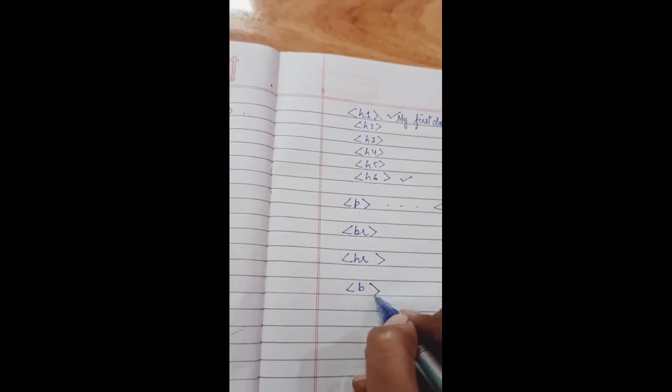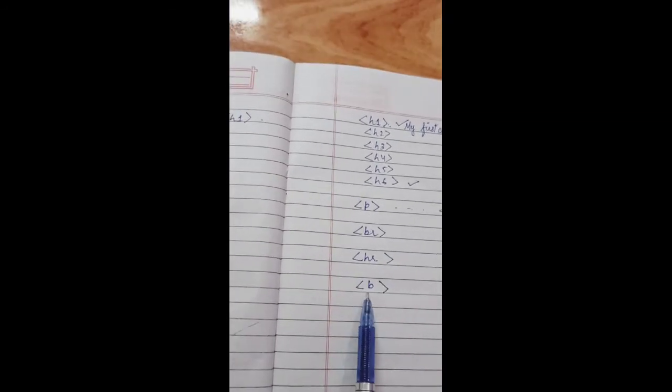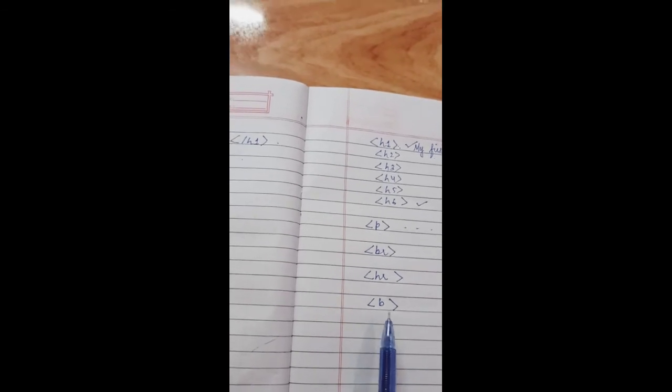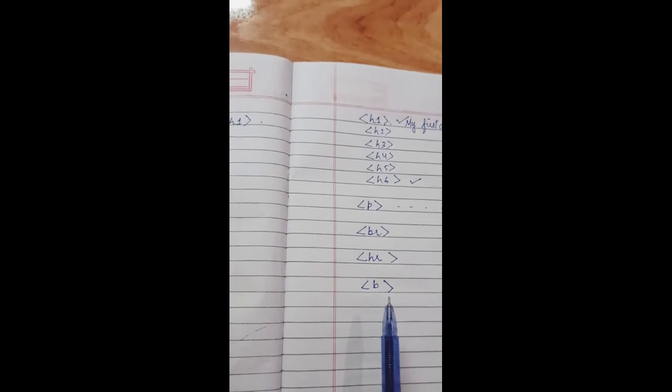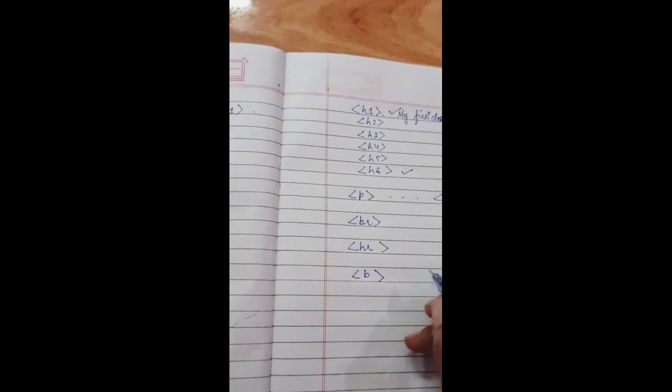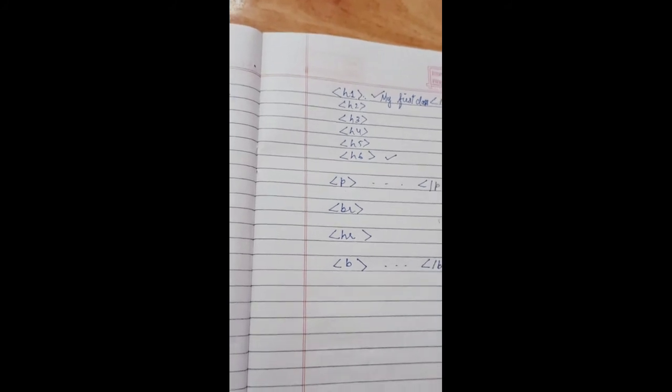Then bold tag. This is written as small B and it is used to give a bold effect to the text on a web page. It is a container tag starting with B and ending with backslash B.